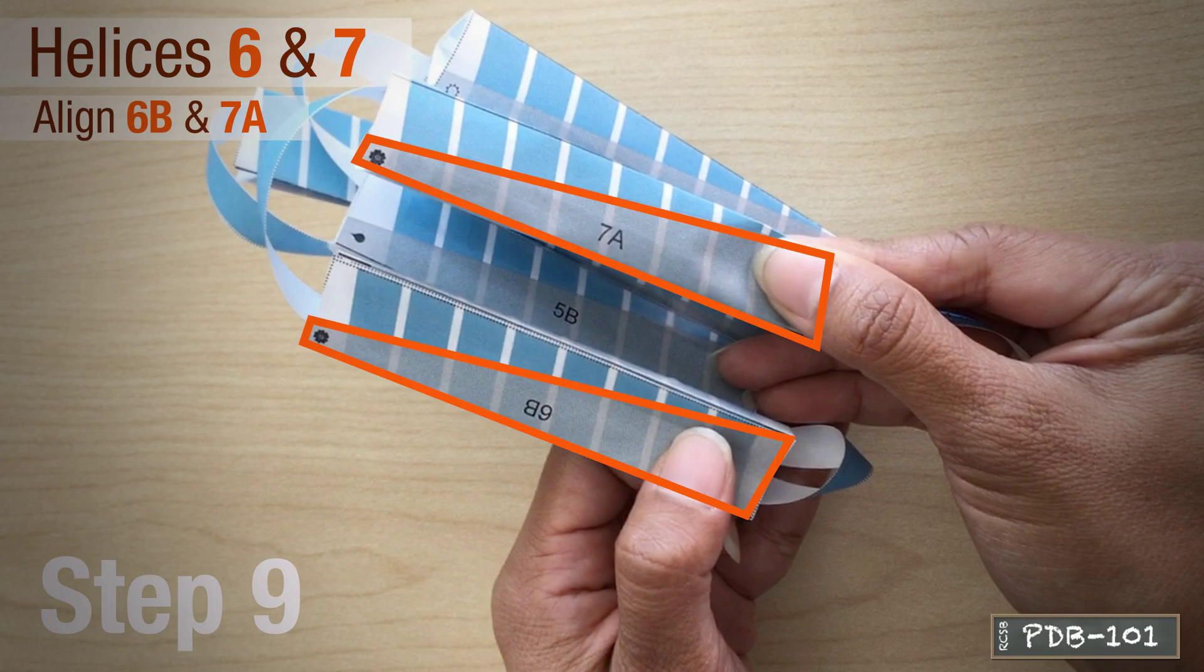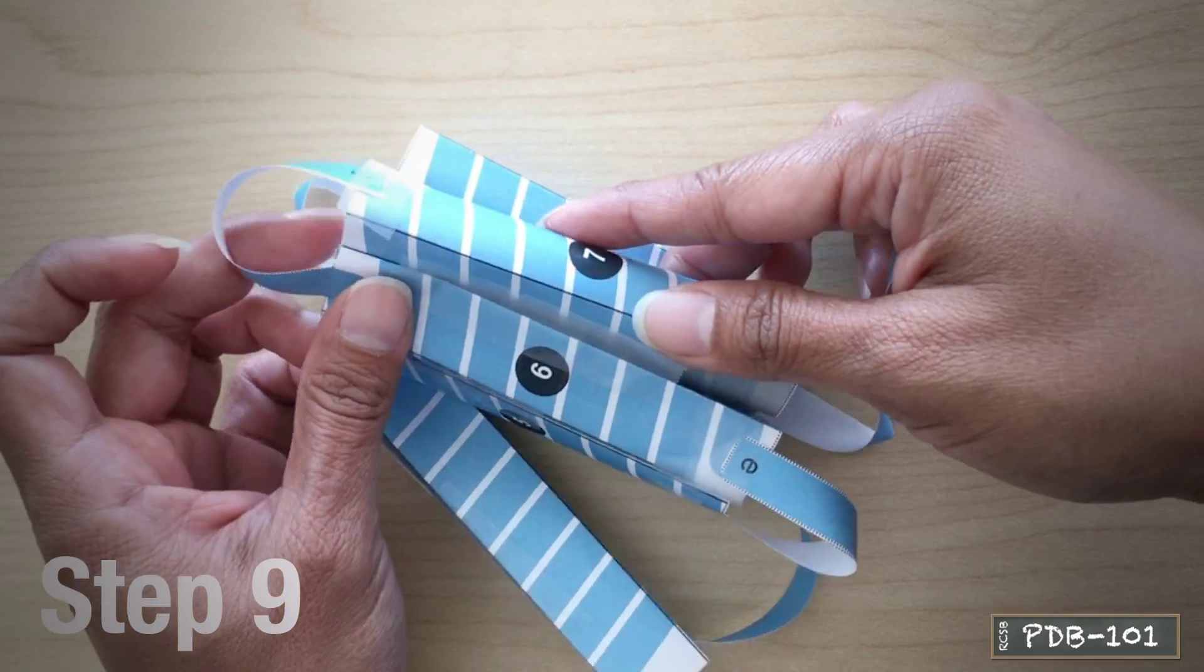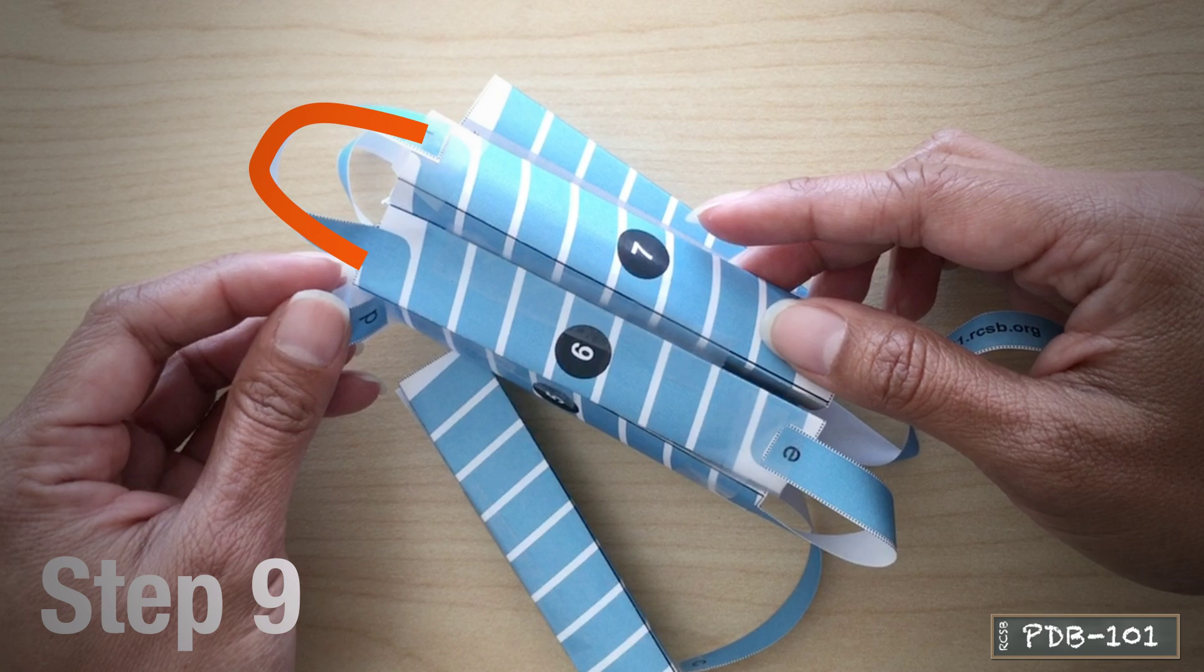Connect helices 6 and 7 by aligning areas 6B and 7A, matching the position of the flower symbols. Now you will notice the last extracellular loop forming.